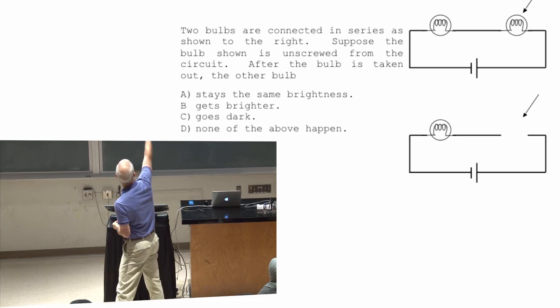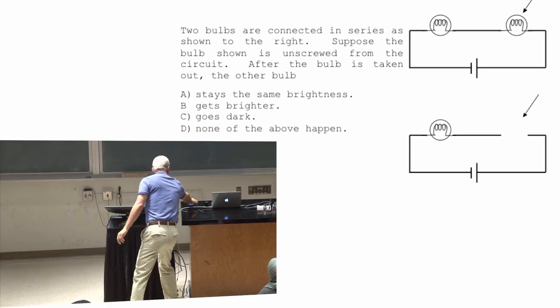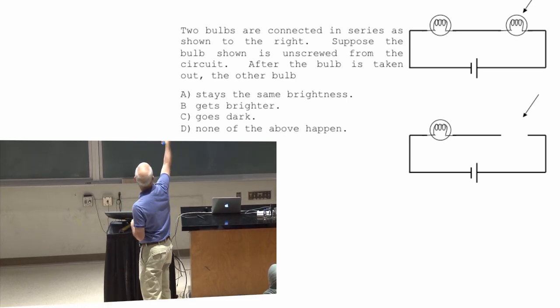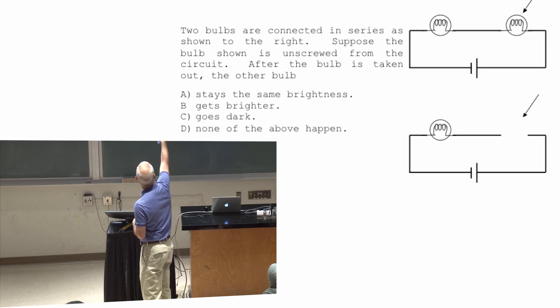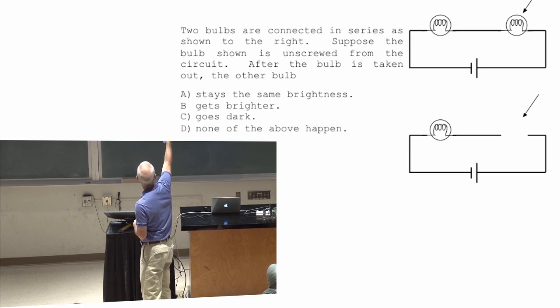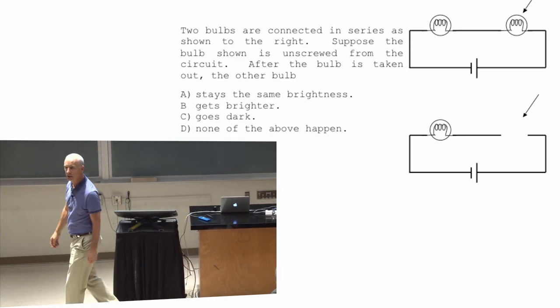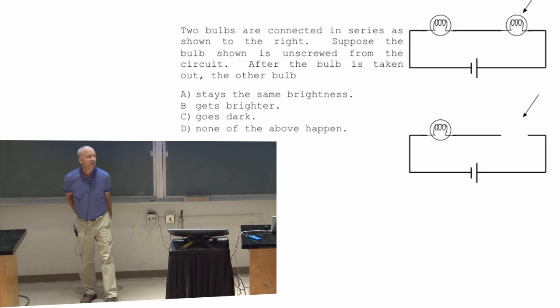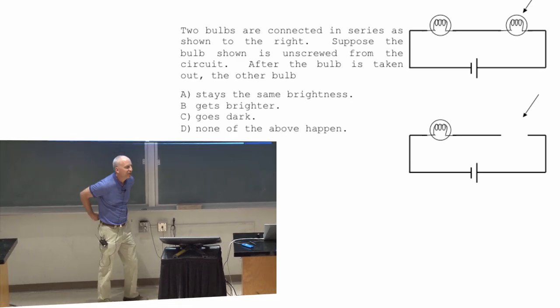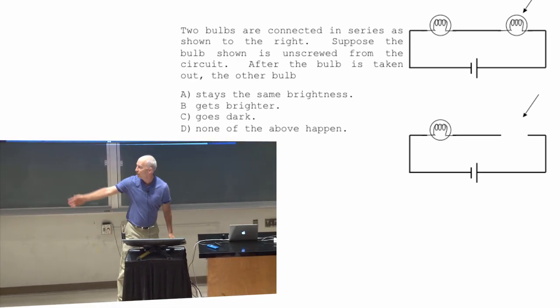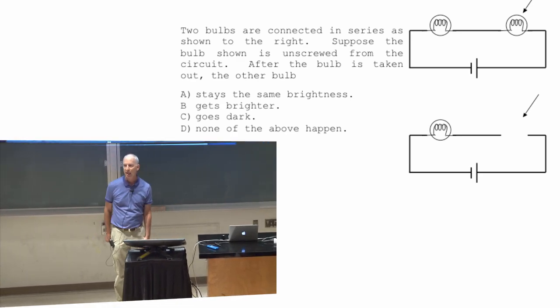When I have the light bulb in there, the wire connects to a light bulb filament, which connects to the other wire. When I take the light bulb out, that filament's not there anymore. So that picture is a representative of what's going to happen when I pull that bulb out.